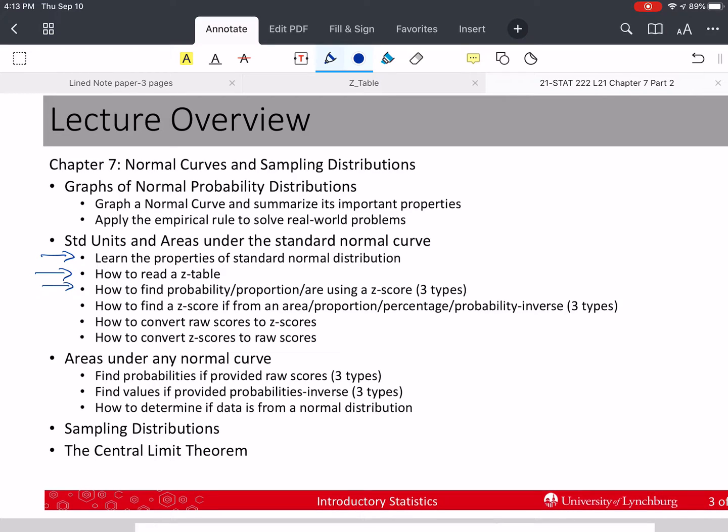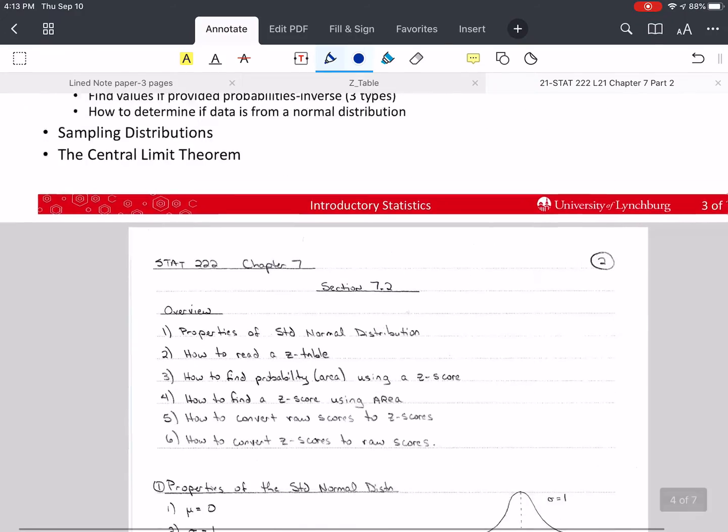This time we're going to talk about the standard normal. We're going to learn the properties of the standard normal, how to read a z-table. That's very important. You're going to need that from here on out. And we're going to start talking about how to use the z-table to find probabilities, proportions, area, percent. All of those are going to be the same thing.